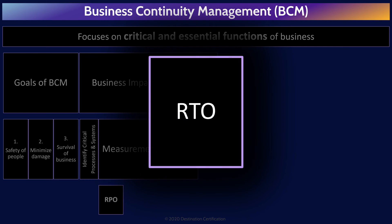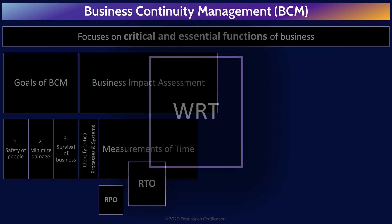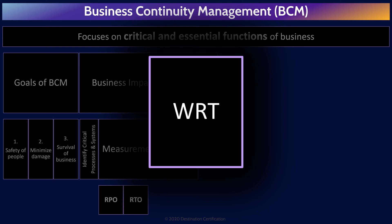The recovery time objective, the RTO, is a measurement of the maximum tolerable time to recover systems to a defined service level. Typically, this means how long it takes to bring backup systems online. The work recovery time, the WRT, is the maximum tolerable amount of time to verify systems and our data integrity as part of returning systems to normal operations.